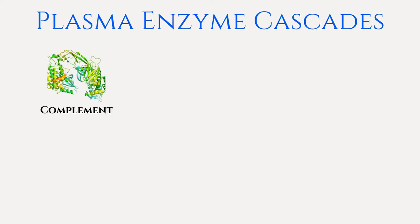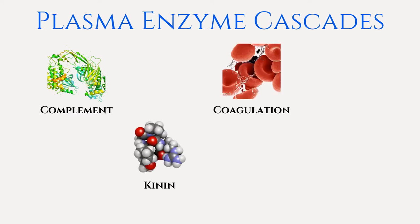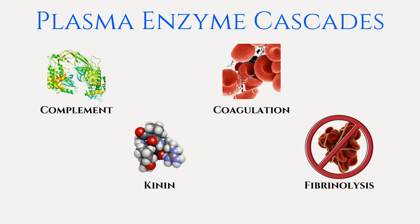I will be going over four types of plasma enzyme cascades and the mediators released from each: the complement protein system, the kinin system, the coagulation system, and the fibrinolysis system.